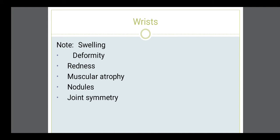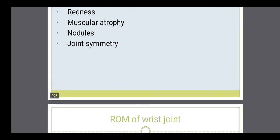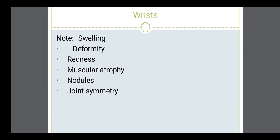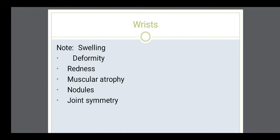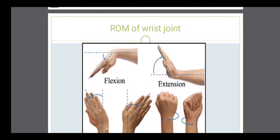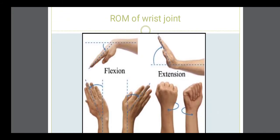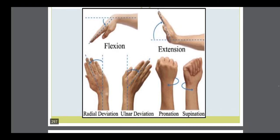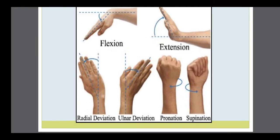The wrists are sites for arthritis — normally rheumatoid arthritis patients show problems over the wrist. On the wrist joint, you have to see for swelling, deformity, redness, muscular atrophy, nodules, and joint symmetry, which is distorted in rheumatoid arthritis. The range of motion of the wrist joint includes flexion, extension, radial deviation, ulnar deviation, pronation, and supination.